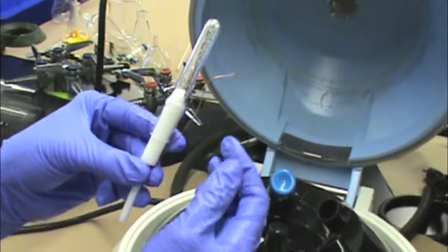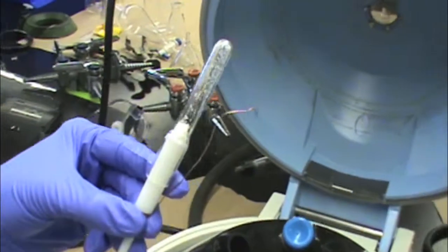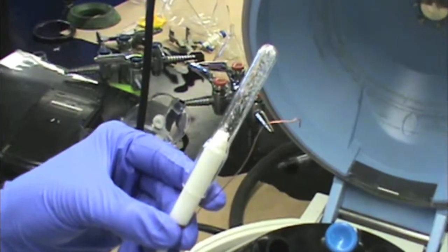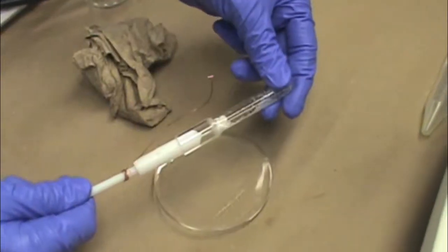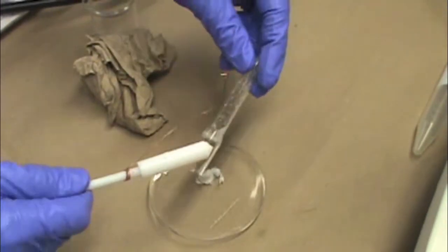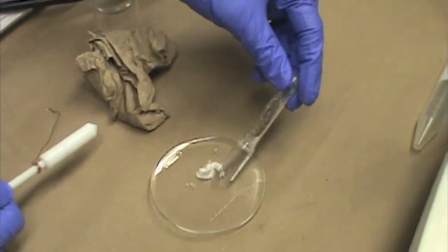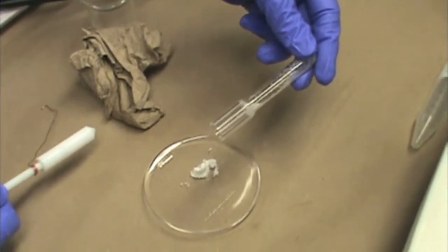Then you will want to empty your solid onto a watch glass or a piece of weigh paper so you can weigh the solid. You can simply remove the Kreg tube insert from the Kreg tube and use the insert to tap out any solid remaining.